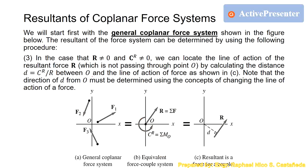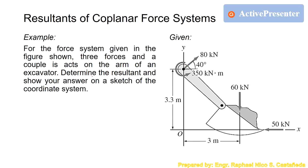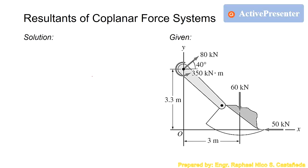Let's do an example. For the force system shown — three forces and a couple acting on the arm of an excavator — determine the resultant and show your answer on a sketch of the coordinate system. To solve this, we first convert the system to an equivalent force-couple system acting at point O by calculating R_x, R_y, and C_R.